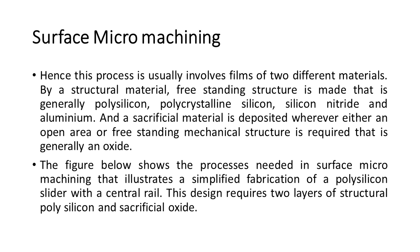The figure below shows the processes needed in surface micro-machining, that illustrates a simplified fabrication of a polysilicon slider with a central rail. This design requires two layers of structural polysilicon and sacrificial oxide.